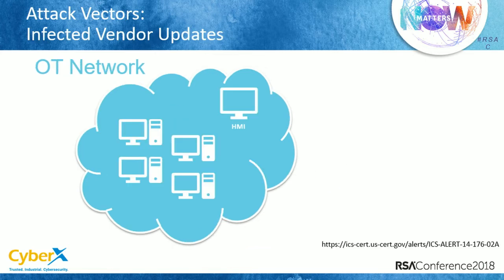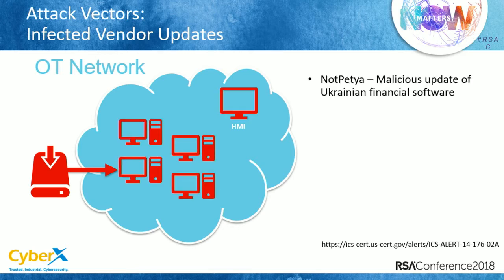A third attack vector — not unimaginable because it's happened a few times already — is that malicious actors, if they want to get into industrial networks, will infect the industrial vendor's software. The first example is from the Ukraine attack — the NotPetya one — where they infected an update of financial software, and everyone who had that software got infected by the update.